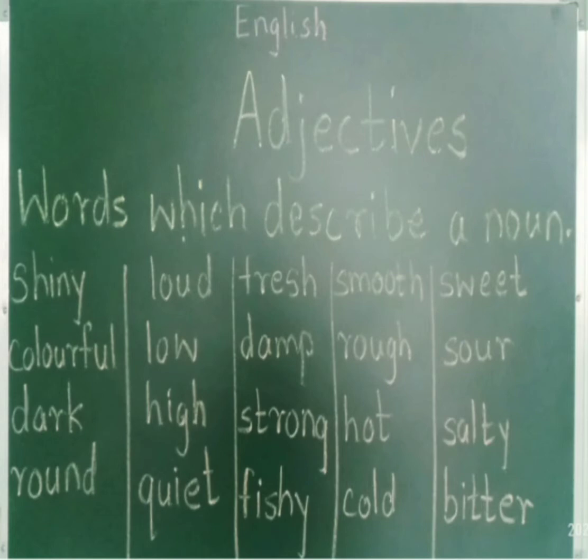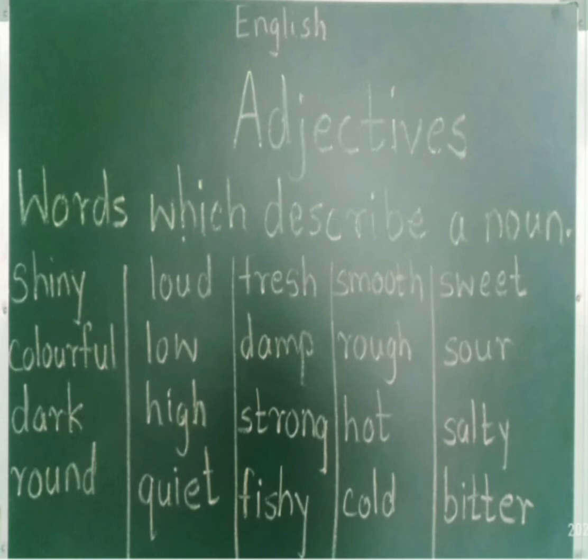So children, what are the adjectives? Adjectives are also known as describing words. An adjective is a word that describes a noun, pronoun, or adds meaning to it. So, in short, we can say that adjectives are the words which describe a noun.